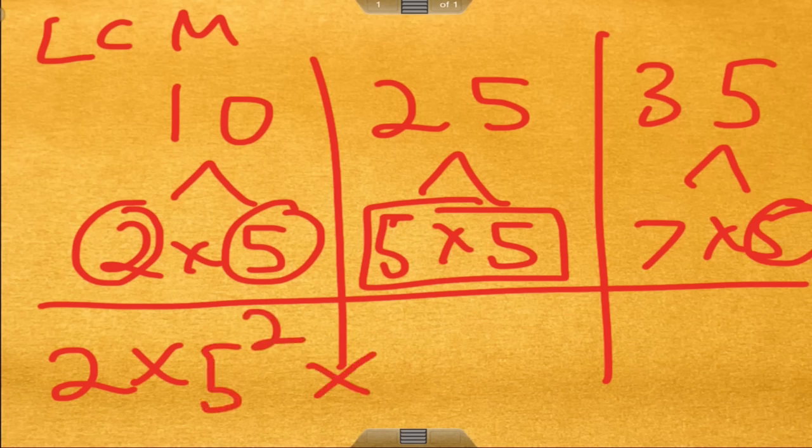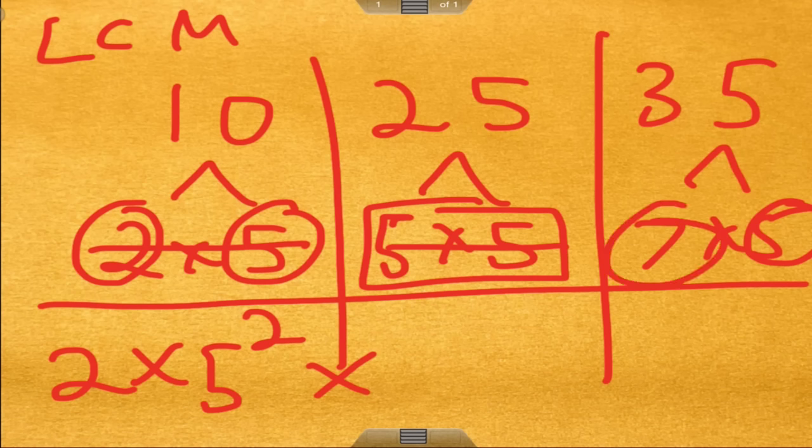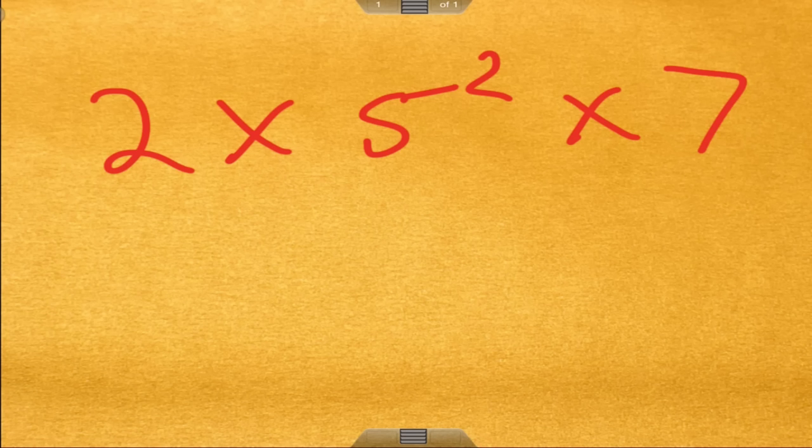We're done with here, we're done with here, but I see a 7, and we need to use a 7. So we have 2 times 5 squared times 7. So 2 times 5 squared times 7 is the least common multiple of those numbers.